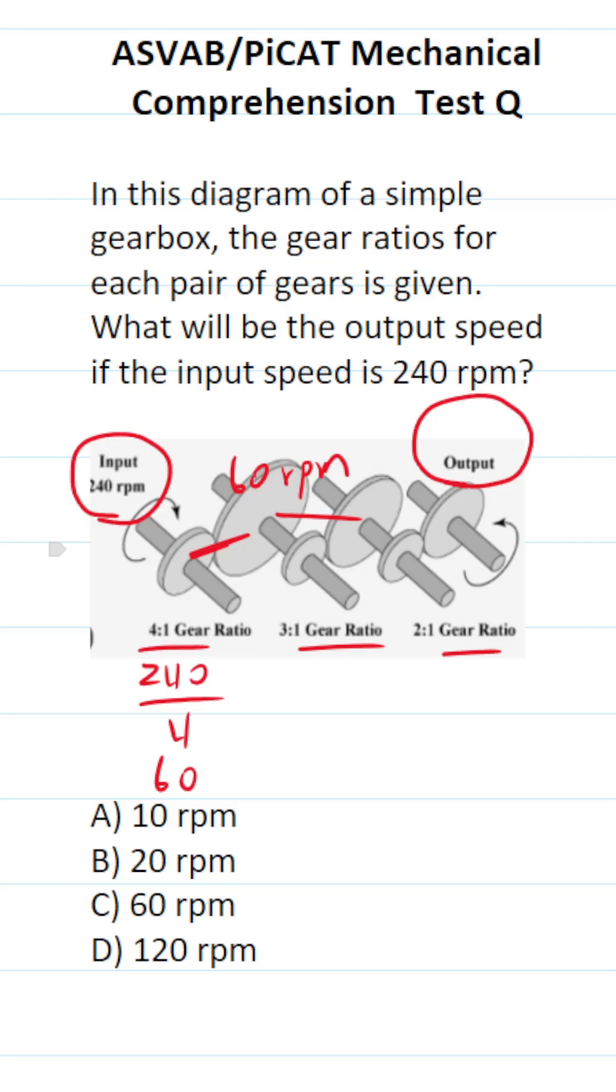Again, this gear and this gear have a ratio of 3 to 1. We know this one's spinning at 60. To figure out how fast this one's spinning, we're going to divide it by 3. 60 divided by 3 is 20. So we know this one is spinning at 20 RPMs.